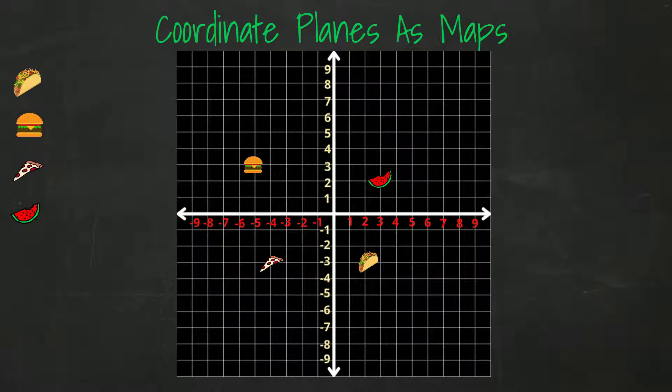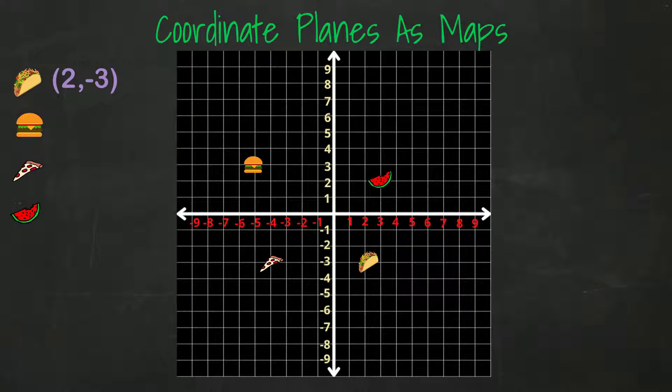The first item is the taco. The taco is in quadrant 4, which means the x-coordinate value will be positive and the y-value will be negative. We can see that on the x-axis, we need to move over two spaces. On the y-axis, we need to move down three spaces. The coordinates for the taco is positive 2, negative 3.